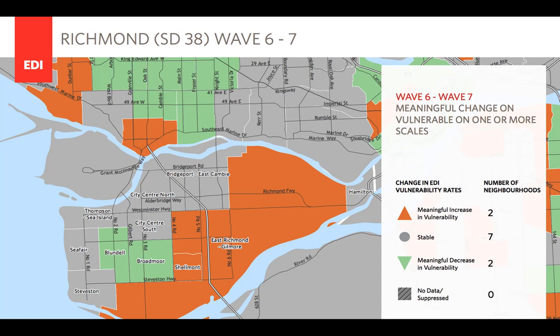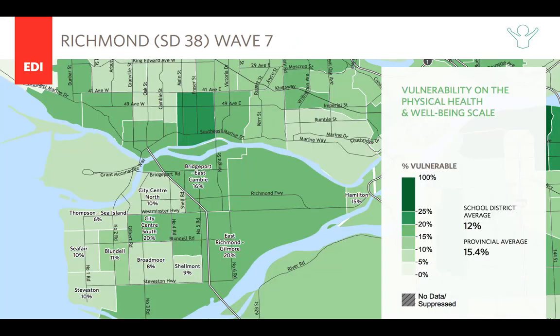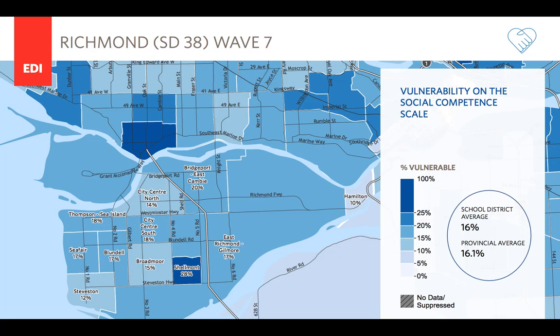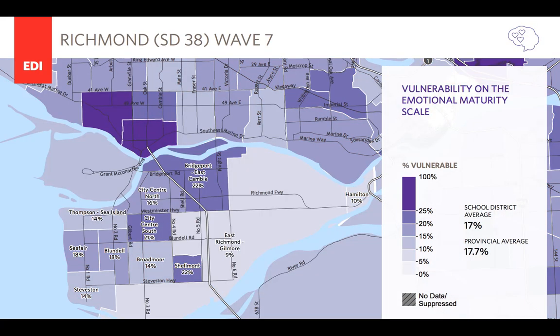There are maps for each of the five scales of the EDI that provide information on the vulnerability rates for Wave 7 across neighborhoods within a school district. It's helpful to pay attention to neighborhoods where vulnerability rates are consistently high or low across each of the five scales, and communities where vulnerability rates differ between scales. For social competence, there is more consistency across neighborhoods, with most in the 15 to 20% range of vulnerability. Then when we look at the same community for emotional maturity, you can see quite a bit of variability — two neighborhoods in the 5 to 10 range, three neighborhoods in the 10 to 15 range, and so on.